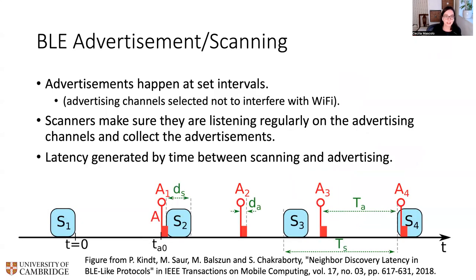Advertising generally happens at set intervals. These advertising channels are selected so as not to interfere with other common networks such as Wi-Fi that may operate on the same frequency. Scanners listen regularly on certain advertising channels, collect advertisements, and when advertisements arrive, connectivity can be established.